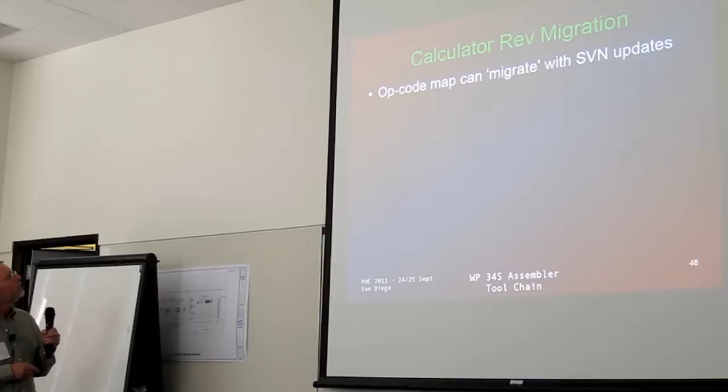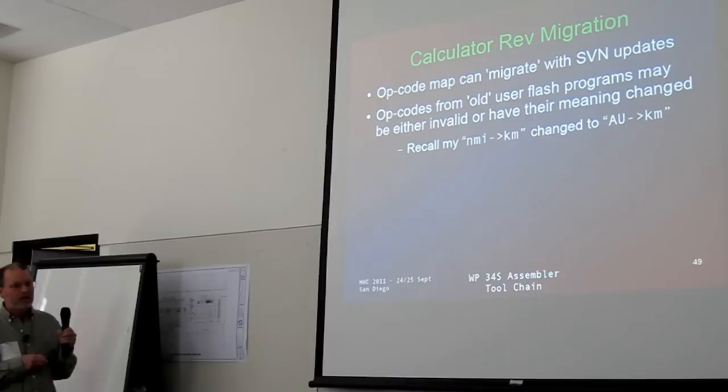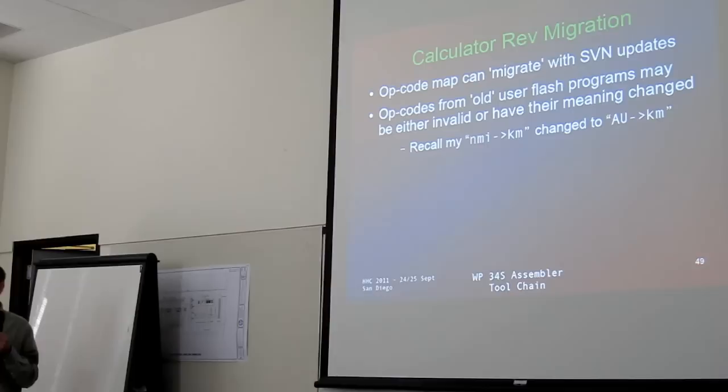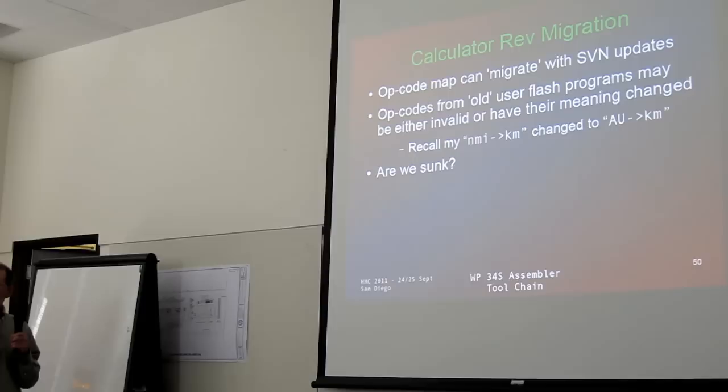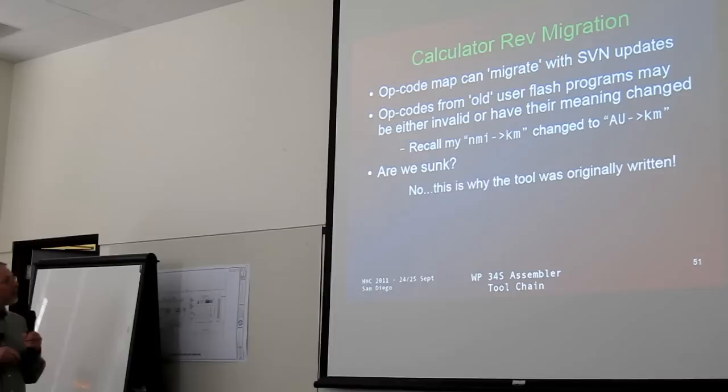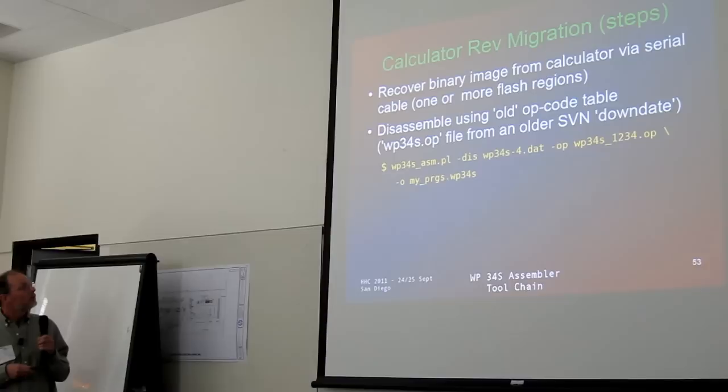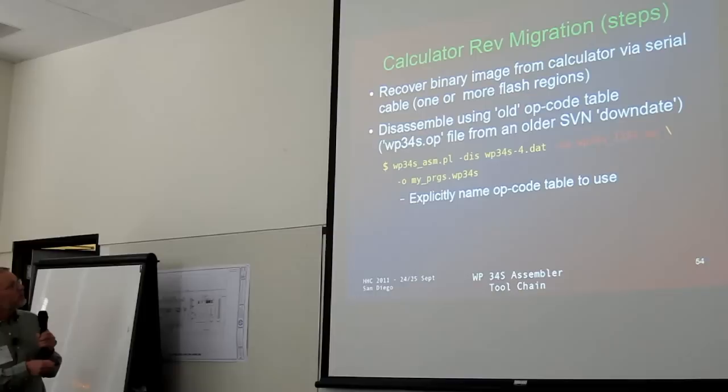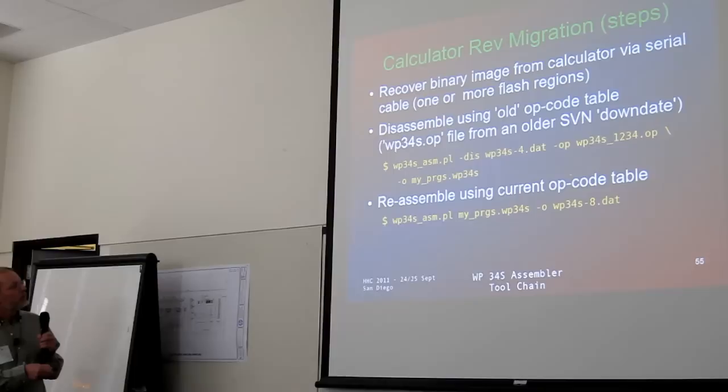You can migrate programs between revisions of the calculator — this is why I wrote the tool, so my astronomical units issue wouldn't happen again. You read the data back out of the calculator from an older SVN, disassemble it with the old SVN table, then reassemble with the current SVN table. Now my astronomical units will be nautical miles to kilometers again, and I'll find out how far Vancouver had to fly to Austin.